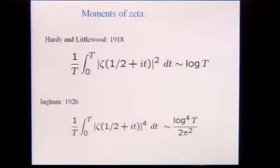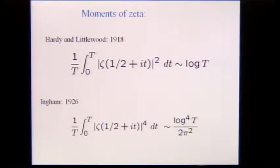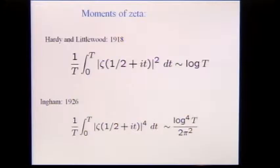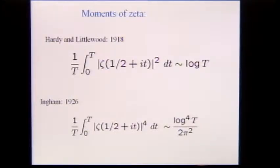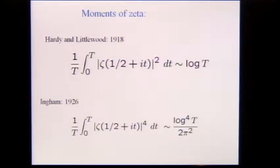I want to start by giving a collection of examples of the kinds of statistics. This goes back to Hardy and Littlewood, who proved an asymptotic formula for the mean square of the zeta function on the half-line. If you believe the Riemann hypothesis, that implies the Lindelöf hypothesis — that zeta doesn't grow too fast on the half-line. For any epsilon, zeta of one-half plus it should be smaller than t to the epsilon. And then, if you average, you can get nice results — for example, Ingham's fourth power moment: the fourth power of the absolute value of the zeta function on the half-line grows like log to the fourth of t times one over two pi squared.